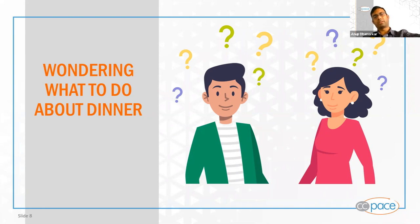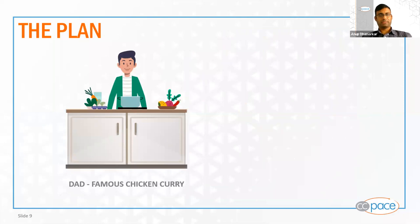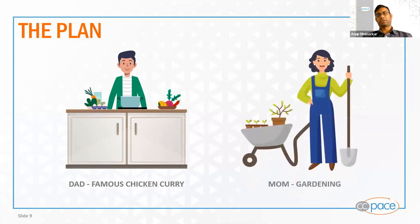We finally decided on the plan: Dad would be making the famous chicken curry — that's my specialty. I have been doing this since I was in college, 20 years ago, and over time I have perfected the recipe. I decided I'll make that chicken curry and make a great awesome meal for the family. My wife had some serious gardening to do to save our veggie patch in the backyard, so she decided to do some gardening. That was the plan.